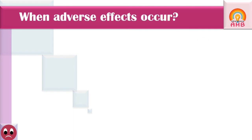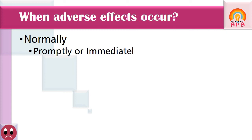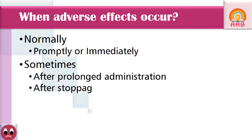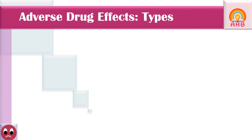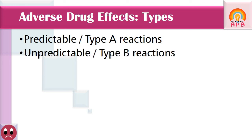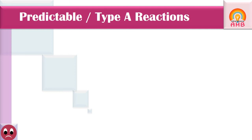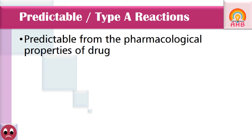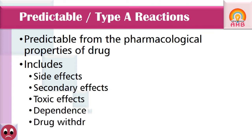Adverse effects may develop promptly or immediately after administration of drugs, but sometimes they are produced after prolonged administration or even after stoppage of the drug. Adverse effects are divided into two types: predictable adverse effects, also called Type A reactions, and unpredictable adverse effects, also called Type B reactions. Type A reactions are predictable from the pharmacological properties of the drug and include side effects, secondary effects, toxic effects, dependence, and drug withdrawal symptoms.